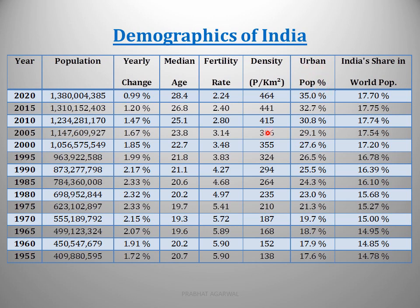Urban population percentage: in 1955 it was very low at 17.6%, meaning only one in six persons lived in a city. It has gradually increased to 35%, meaning roughly one in three persons now lives in cities. Even today, the rural population percentage in India is very high. India's share in world population was high at 14.78% even in 1955 and kept rising to 17.75%, with a slight decrease now to 17.70%, because the yearly population growth rate fell from 1.20% to 0.99%.